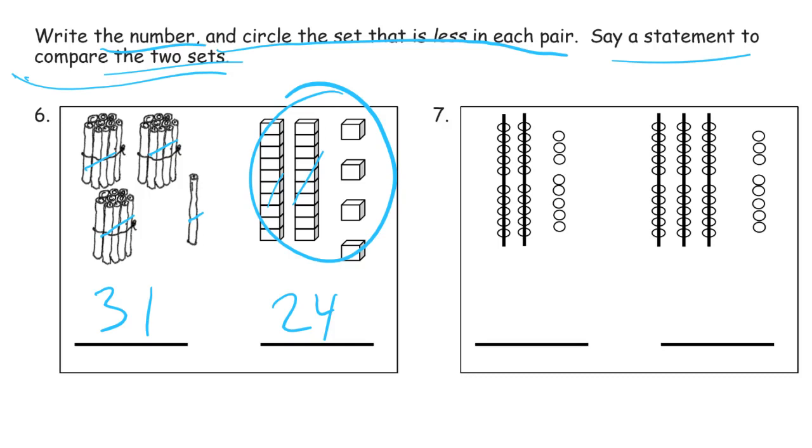So here's two groups of 10, one, two. And this is a five group and three more, that's 8, 28. And this has three tens and it still has eight ones. Circle the set that is less. So 28 is less than 38.